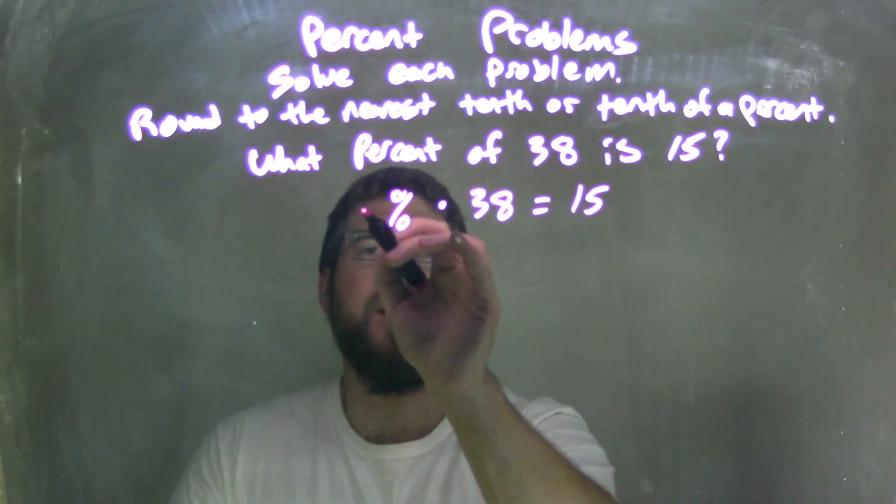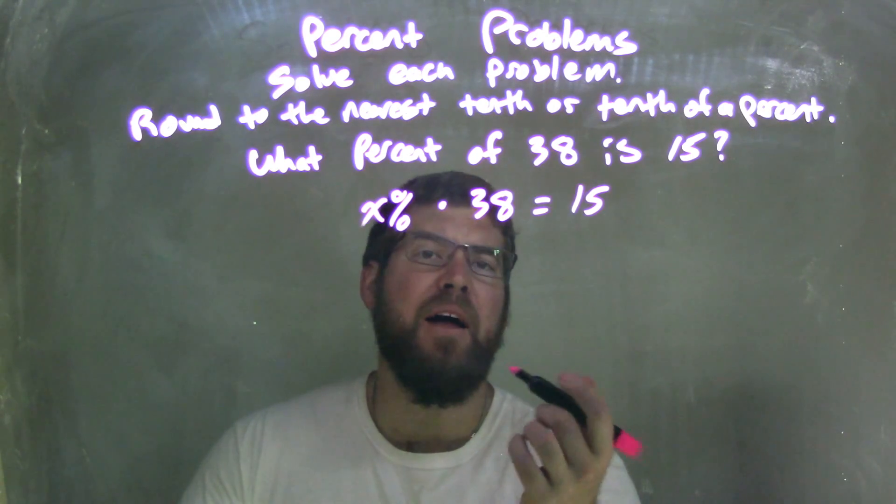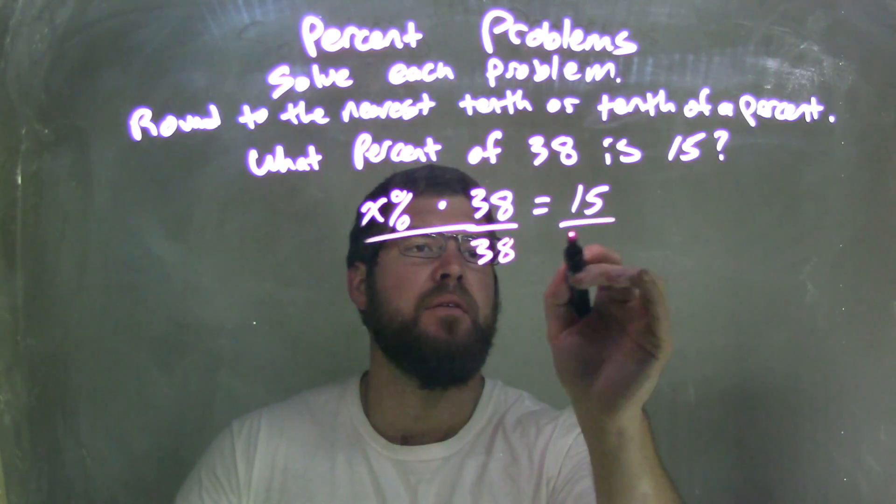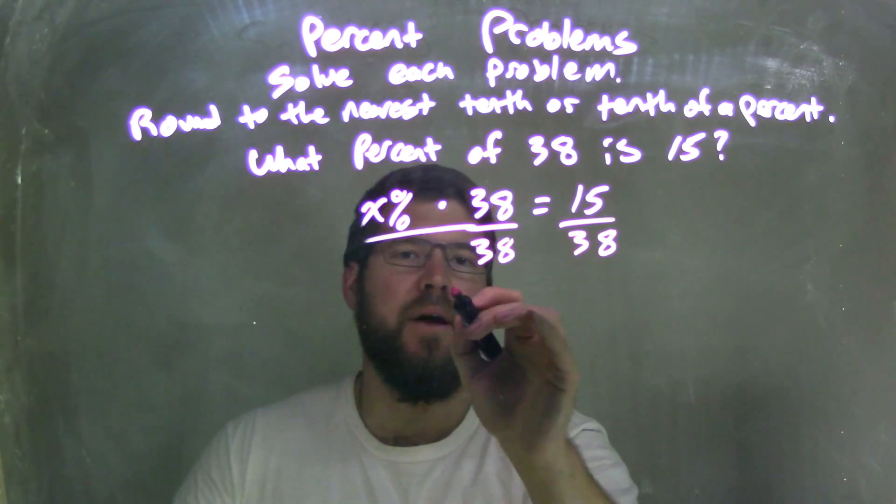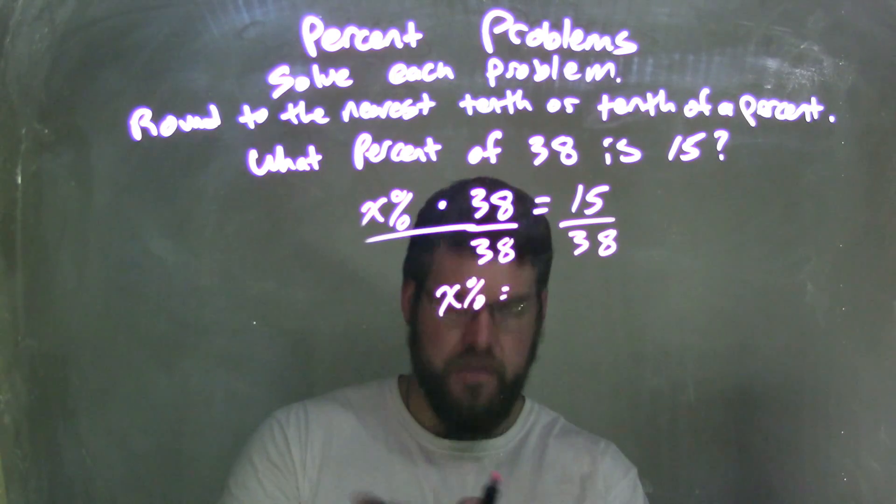Well, if I'm going to solve that, it will be a variable like an x percent there. What percent? I have to divide by 38 to both sides, because there's multiplication here, to get x percent by itself. So that x percent by itself is, well, I need to define it, what it's equal to.